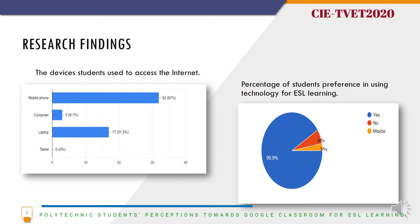Next, the percentage of students' preference in using technology for ESL learning. The pie chart shows that the overall students agree that they prefer to use technology for ESL learning, and the data shows 90.9% of the students prefer to use technology.